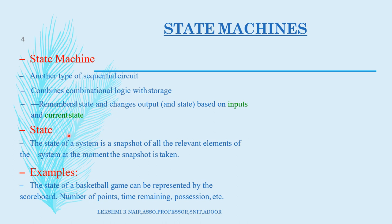Now, what is the state? State of the system is a snapshot of all the relevant elements of the system at the moment the snapshot is taken. For example, in case of a basketball game, what are the relevant elements? We can see all the relevant elements on a scoreboard — number of points, time remaining, position, etc. All these can be considered as the state of the basketball game. Similarly, for a circuit also, we can define states of that circuit.